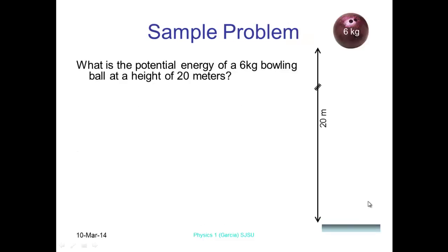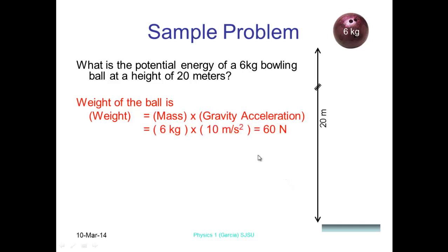So if we use an example of a 6 kilogram bowling ball, we drop that from 20 meters. Well, the weight of the ball is 6 kilograms, so that's going to be 6 kilograms times by gravity. And we'll use in this example gravity is 10 meters per second squared, so that's got 60 newtons worth of weight.